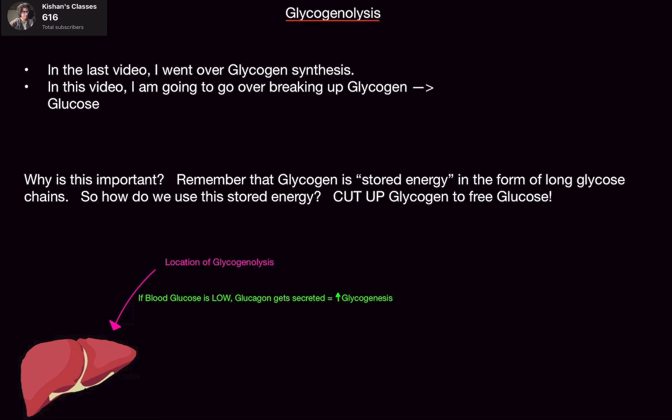In the last biochemistry video, I went over how to make glycogen, so please watch that video before this one, because you need to understand how to form something before you break it up. In this video, like I just said, we're going to go over breaking up glycogen and making glucose — that is what glycogenolysis is.